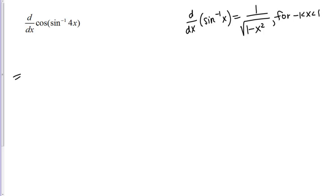Here we have the cosine of the inverse sine of 4x. The inverse sine part is our inner function, and the cosine is our outer function.